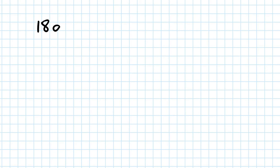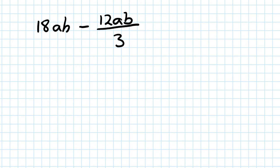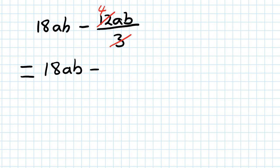Next one: 18ab minus 12ab, all over 3. We simplify the fraction first. 12 divided by 3 is 4, so your answer is 18ab minus 4ab. Now they are like terms, so 18 minus 4 is 14 — your answer is 14ab.